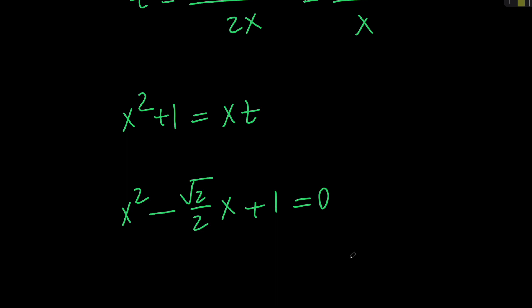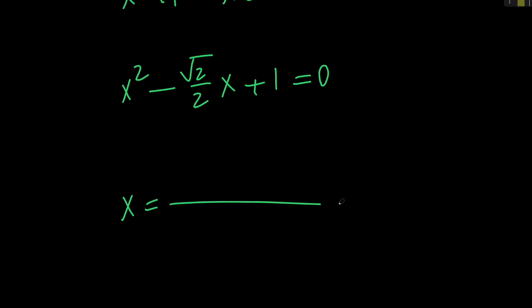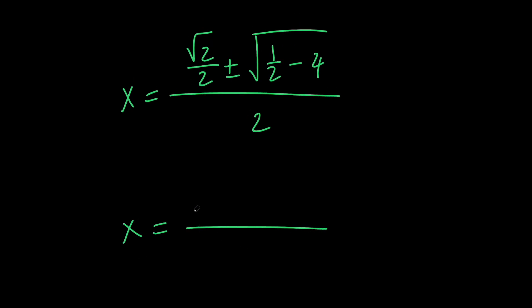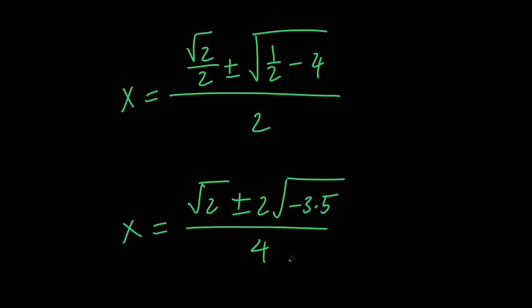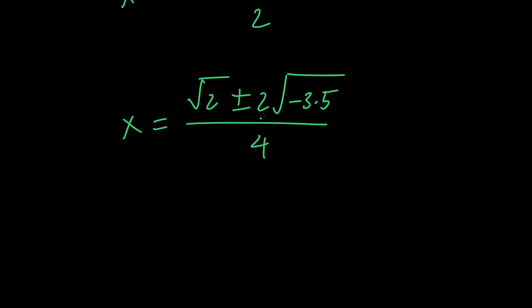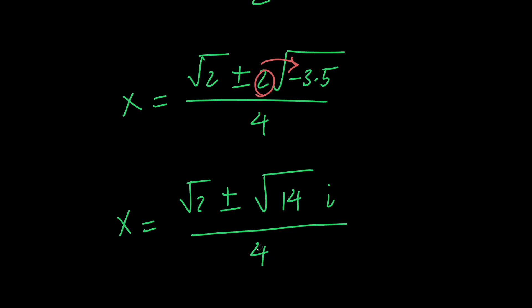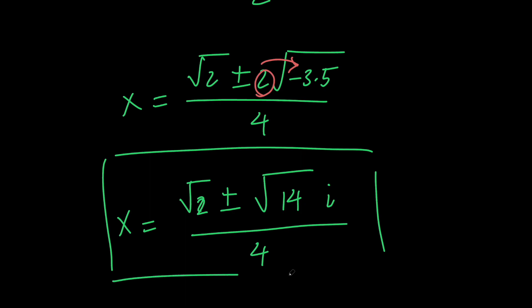Now at this point, in order to solve this for x, we just need to use the quadratic formula. So x equals √2/2 plus or minus the square root of (√2/2) squared, which is 1/2, minus 4, all divided by 2. Let's go ahead and multiply both the top and bottom by 2 to get √2 plus or minus 2 times the quantity negative 3.5, divided by 4. Bringing the 2 in, we get x equals √2 plus or minus the square root of negative 14, which can be written as √14 times i, all divided by 4. So x equals (√2 plus or minus √14 · i) divided by 4 are the two complex solutions of our equation.